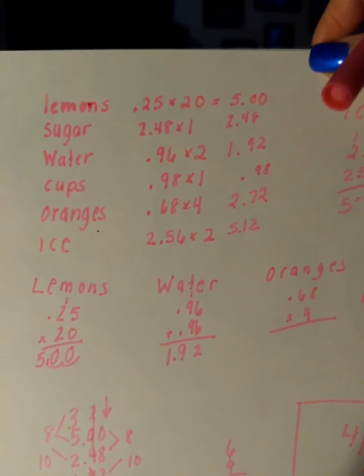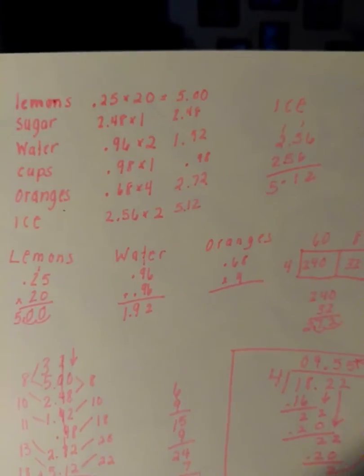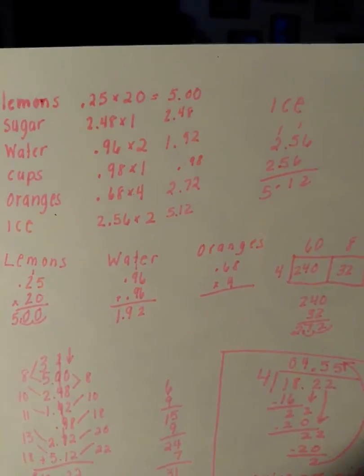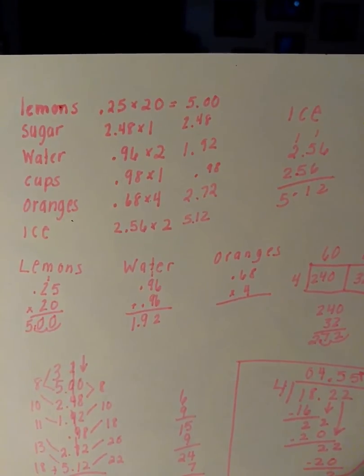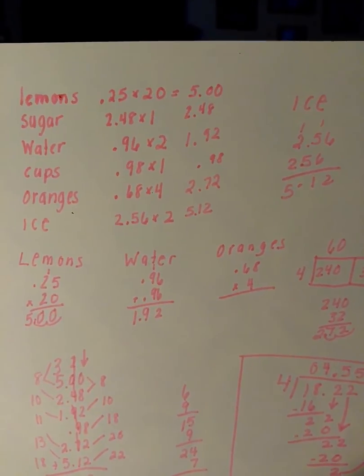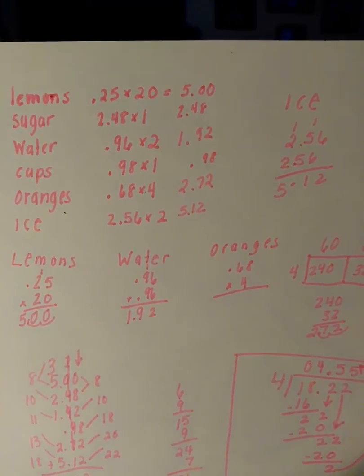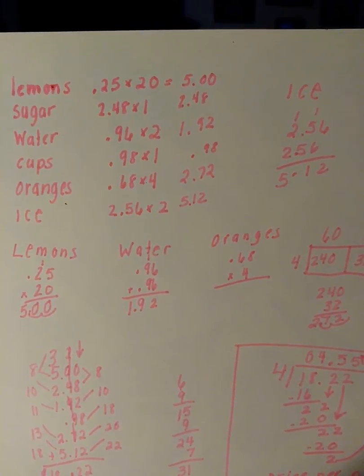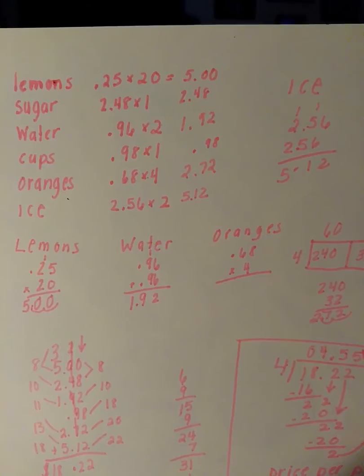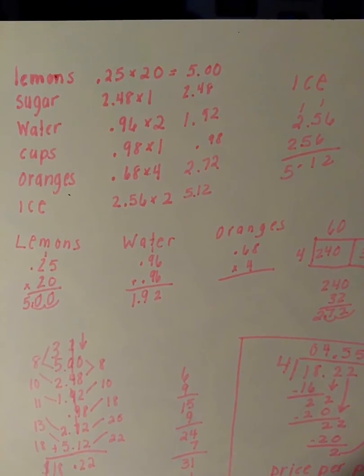So I have that written out here and I have the different ways I use to solve this. For ice I just added $2.56 twice which gave me $5.12. For lemons I went ahead and did standard multiplication because it had a zero and I could just add and move my decimal.